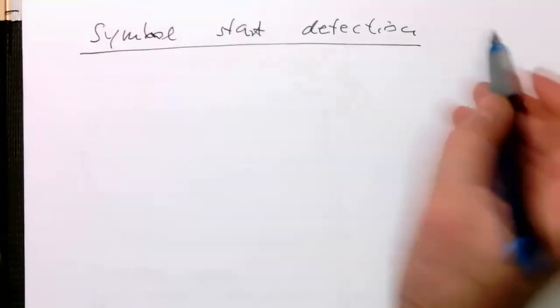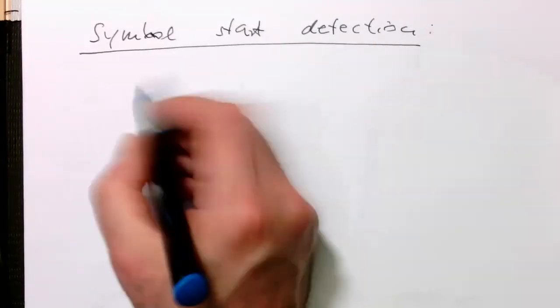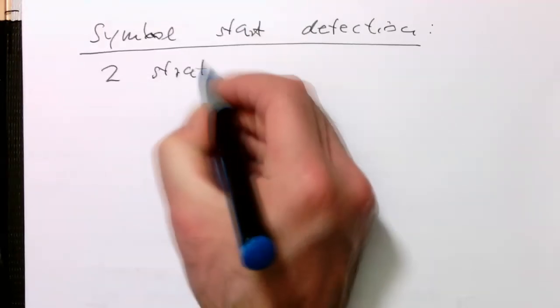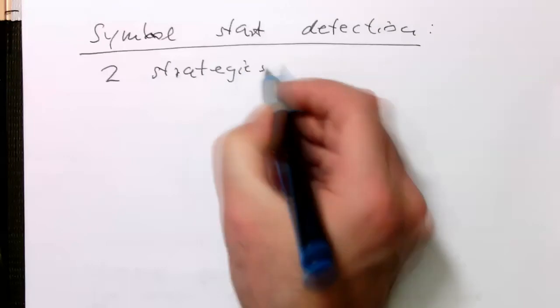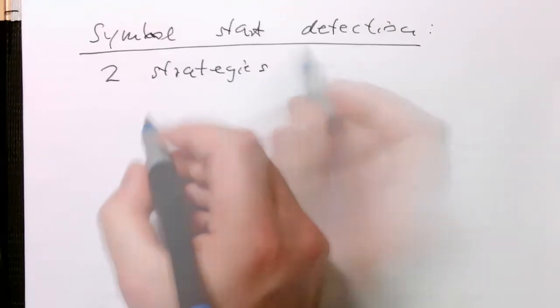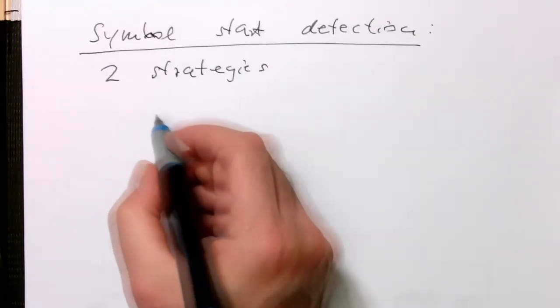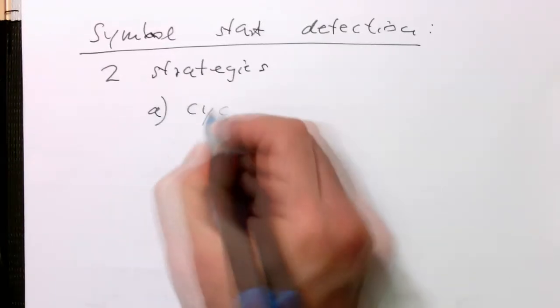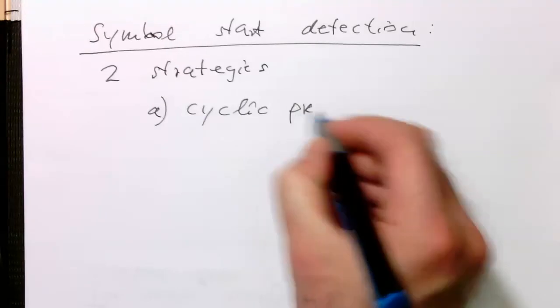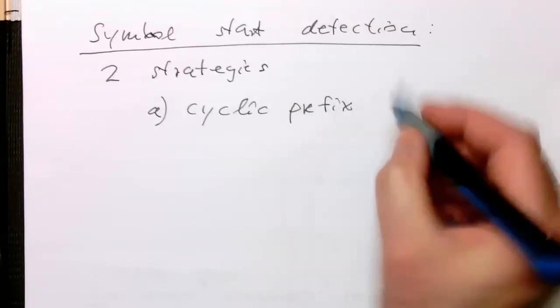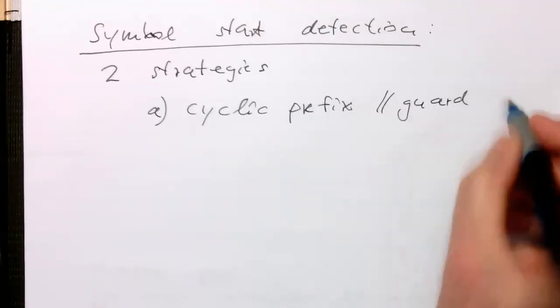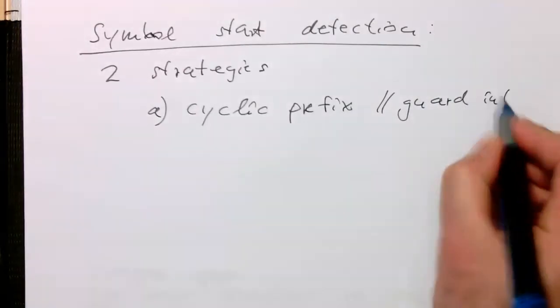We have, for this, two strategies. The first strategy is the so-called cyclic prefix, or also called guard interval.